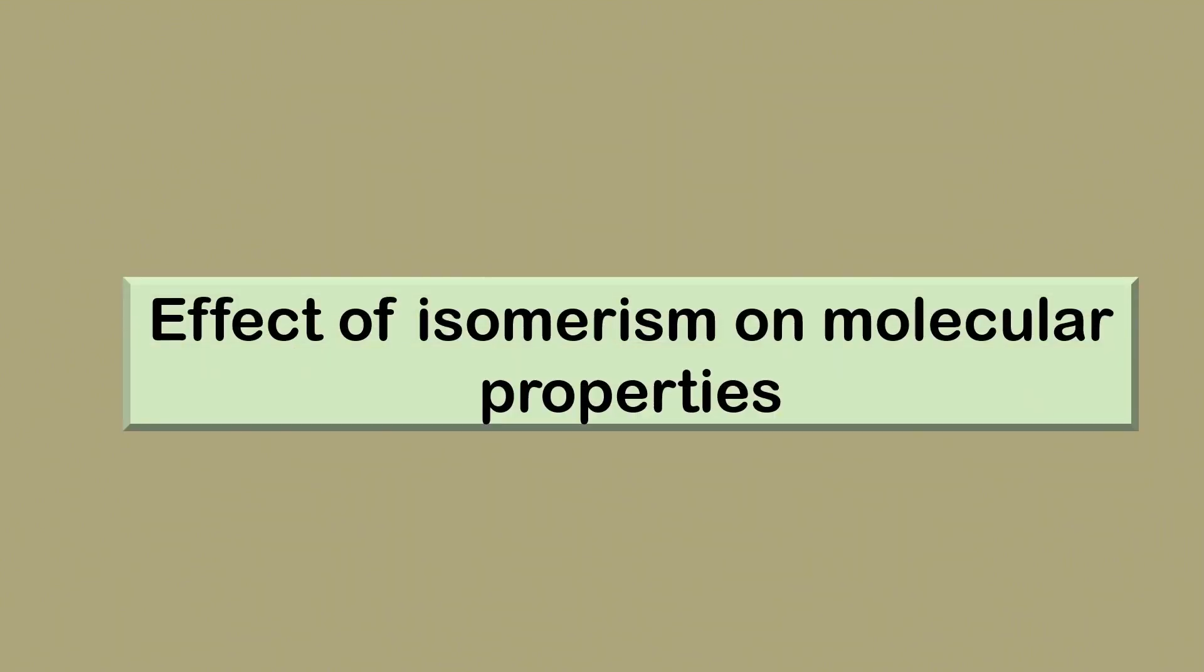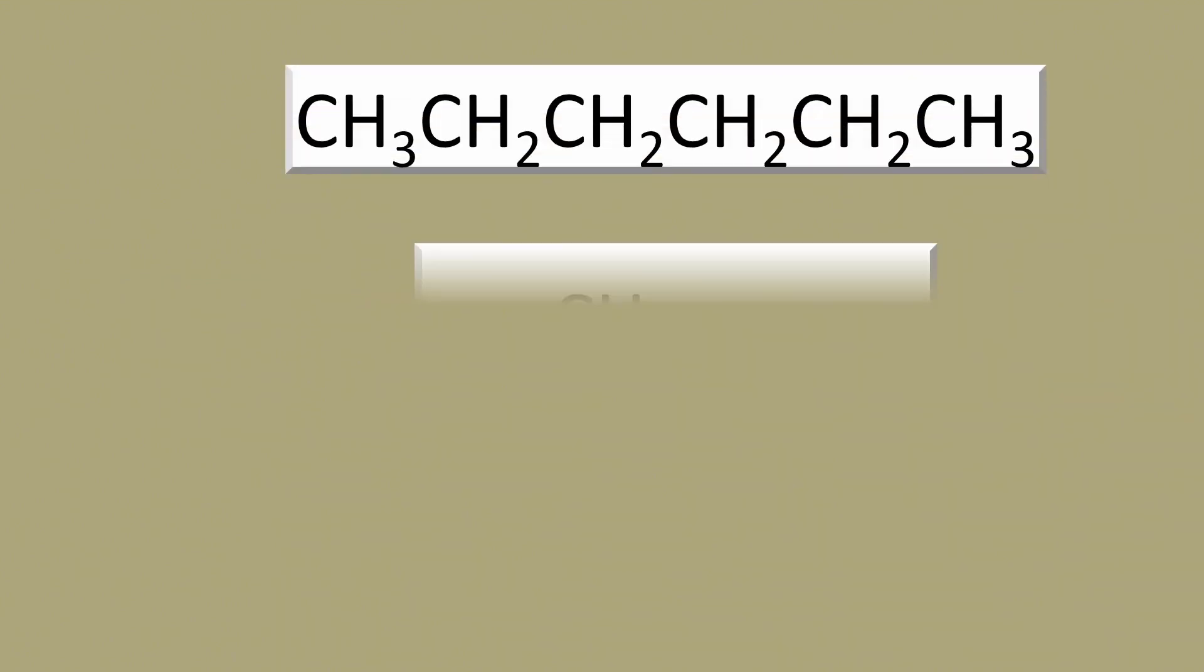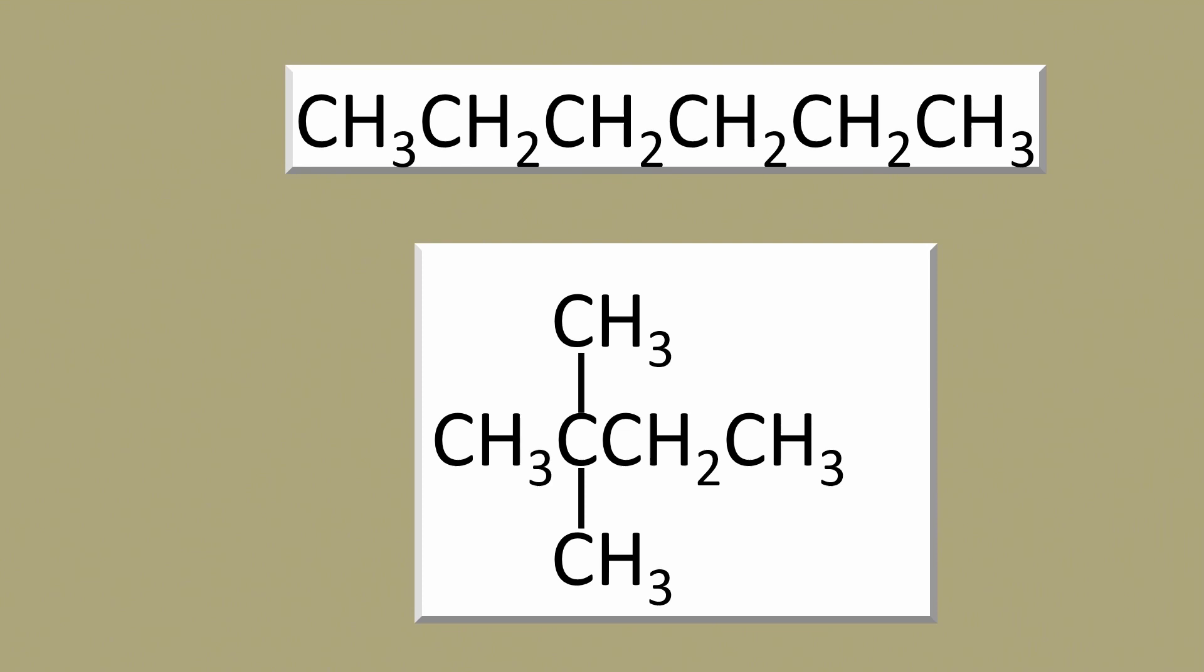Isomerism can affect the molecular properties of a compound. Let's explore this. For illustration, let's use N-hexane and its isomer, 2,2-dimethylbutane.